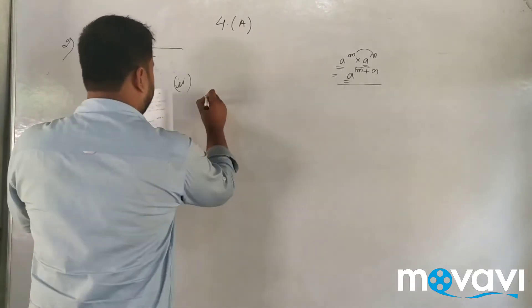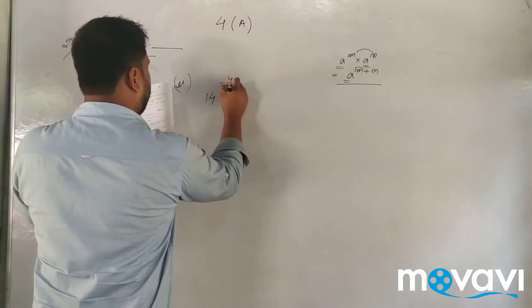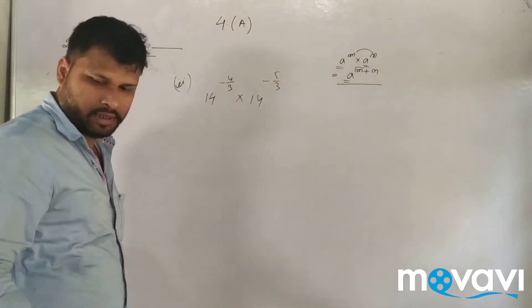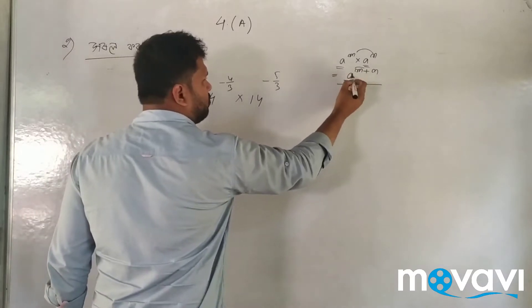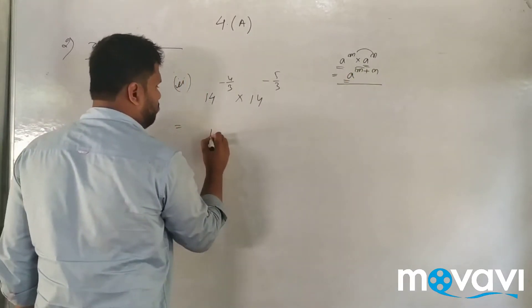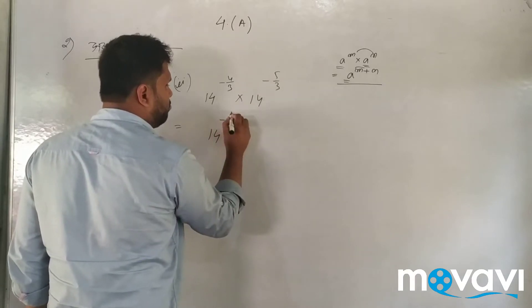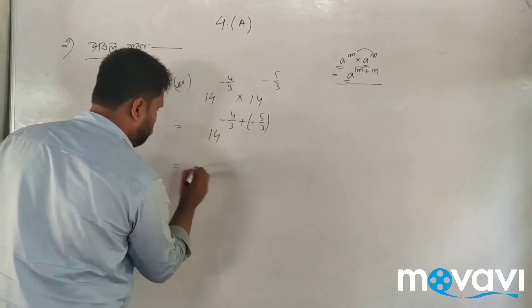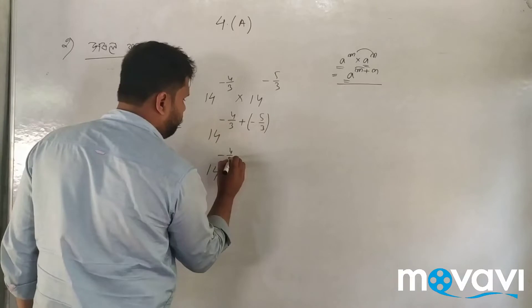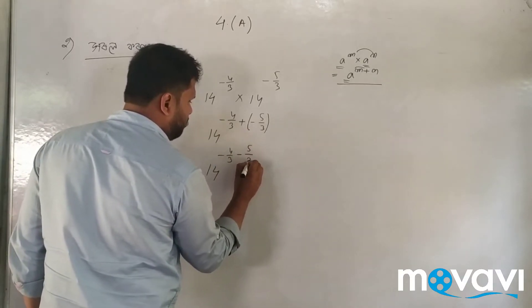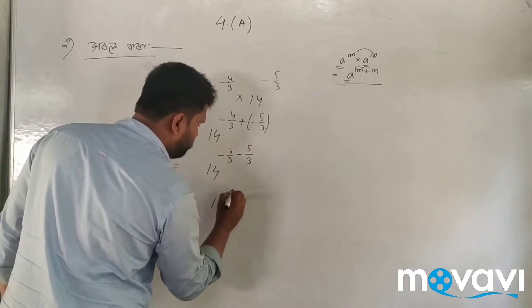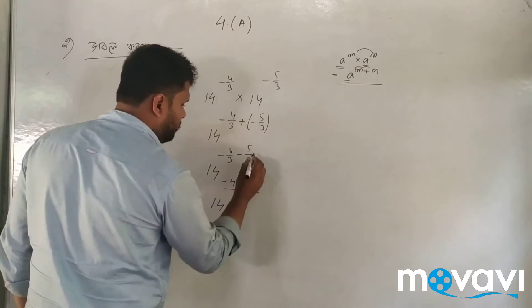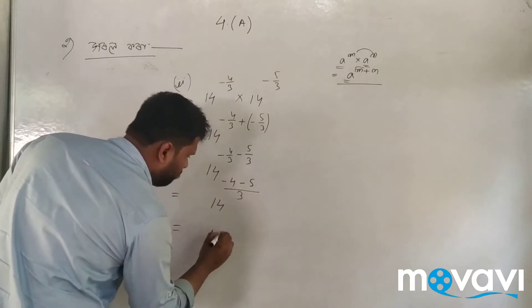14 to the power minus 4 by 3, into 14 to the power minus 5 by 3, into 14 to the power minus 6 by 3. So this gives us 14 to the power of minus 4 by 3 plus minus 5 by 3 plus minus 6 by 3, which simplifies further.